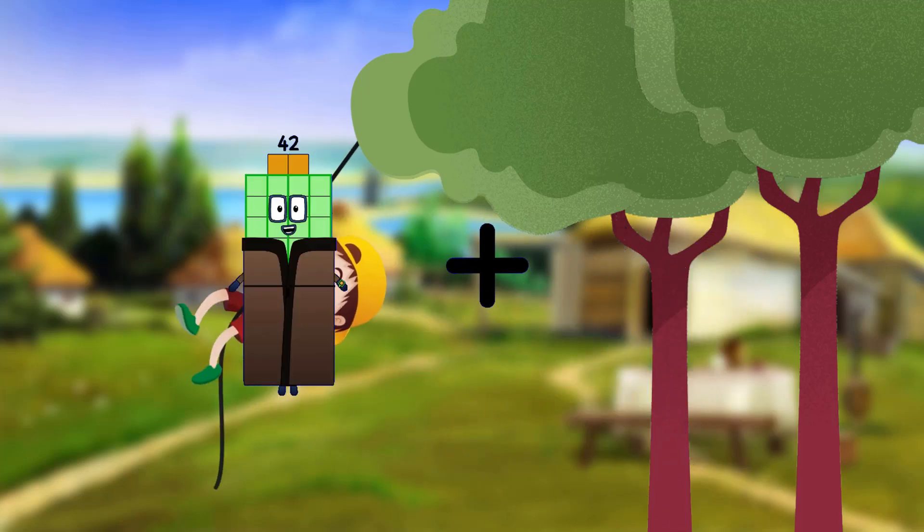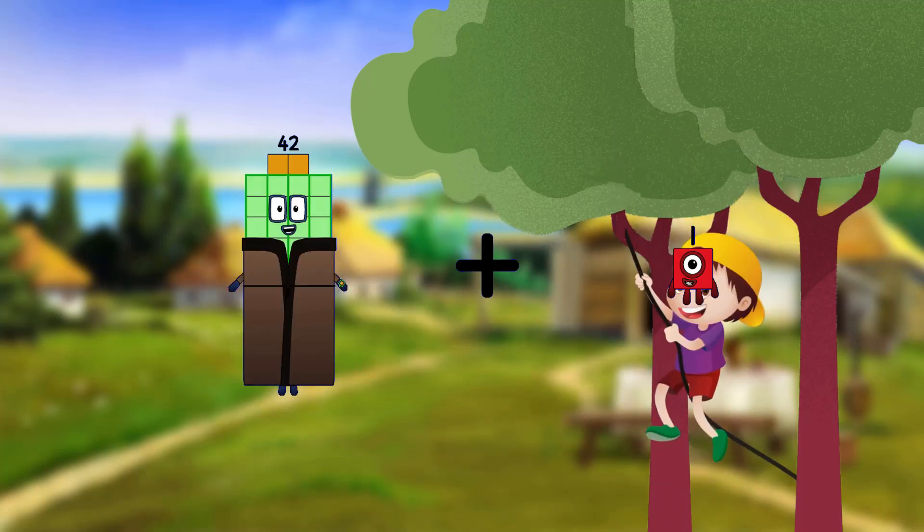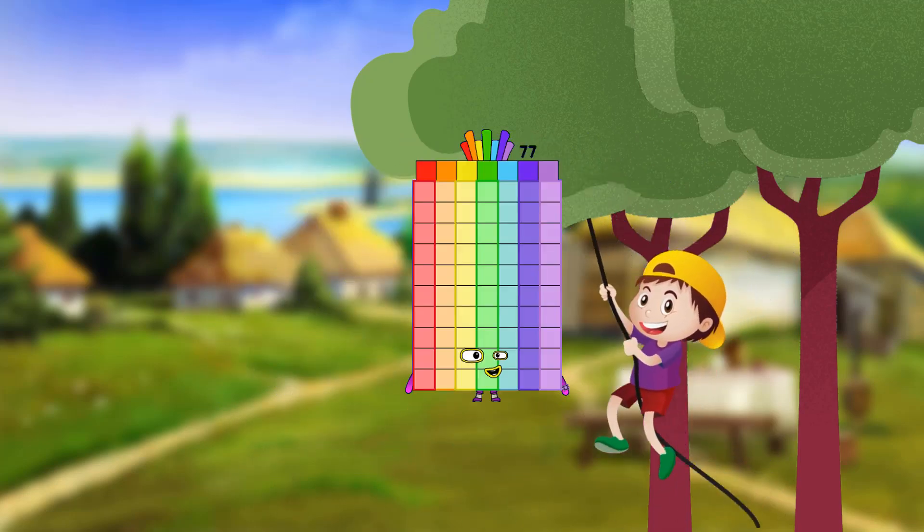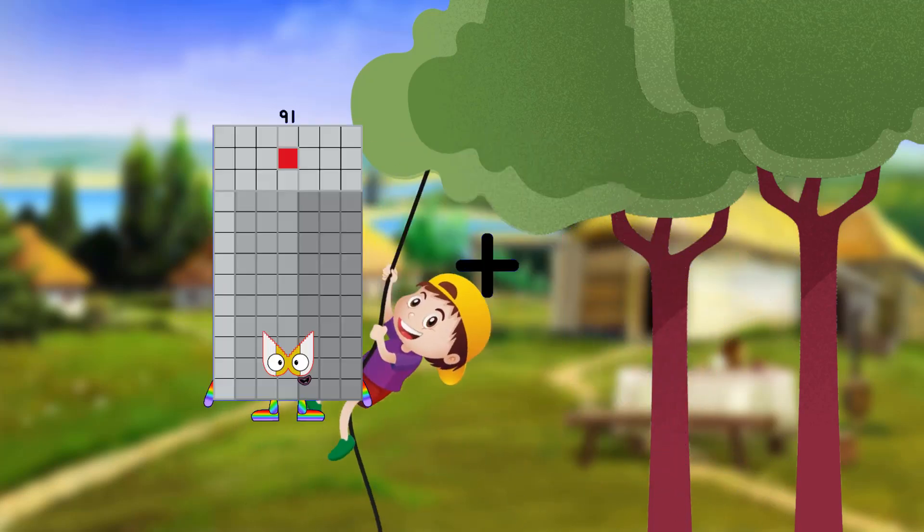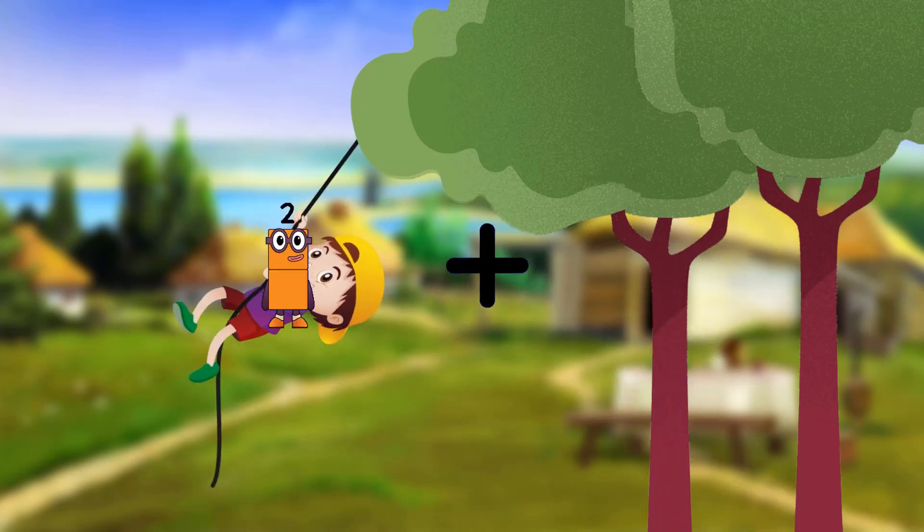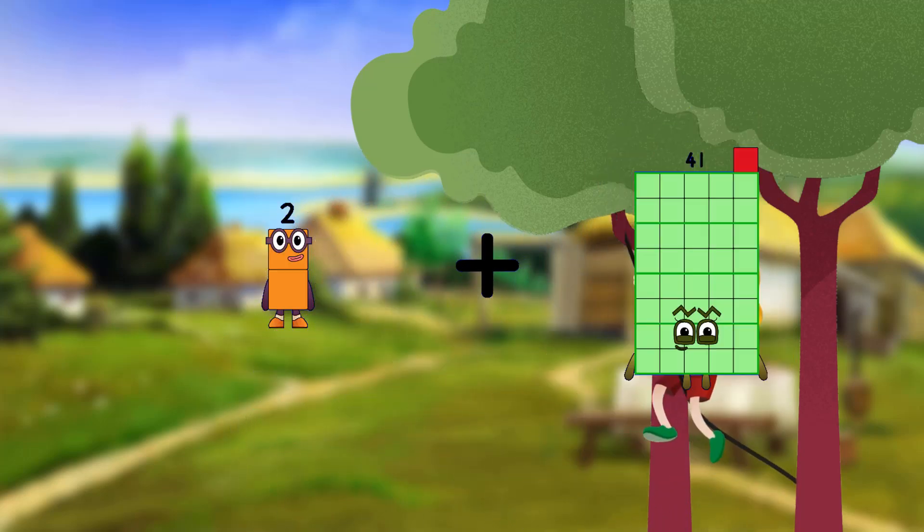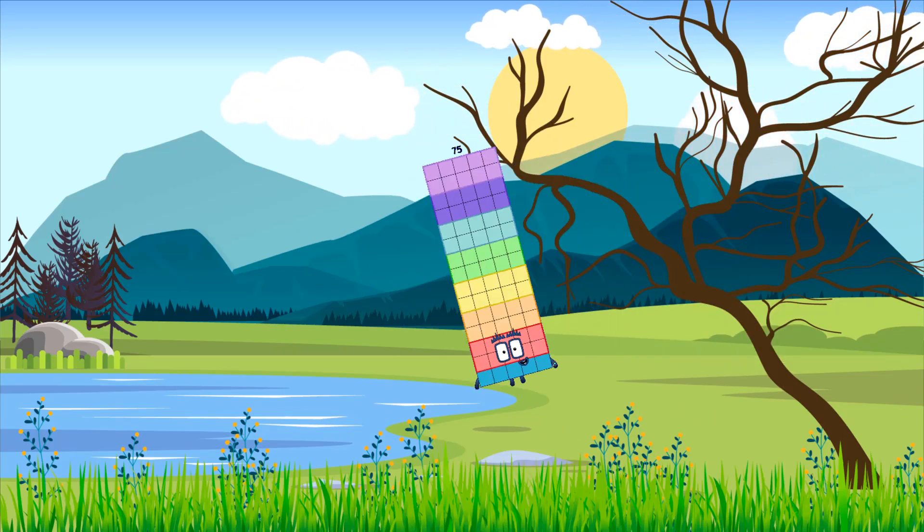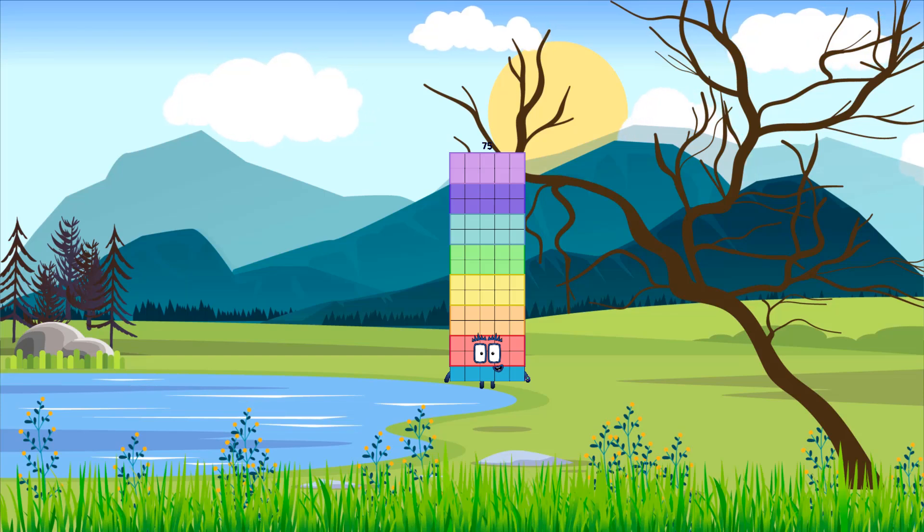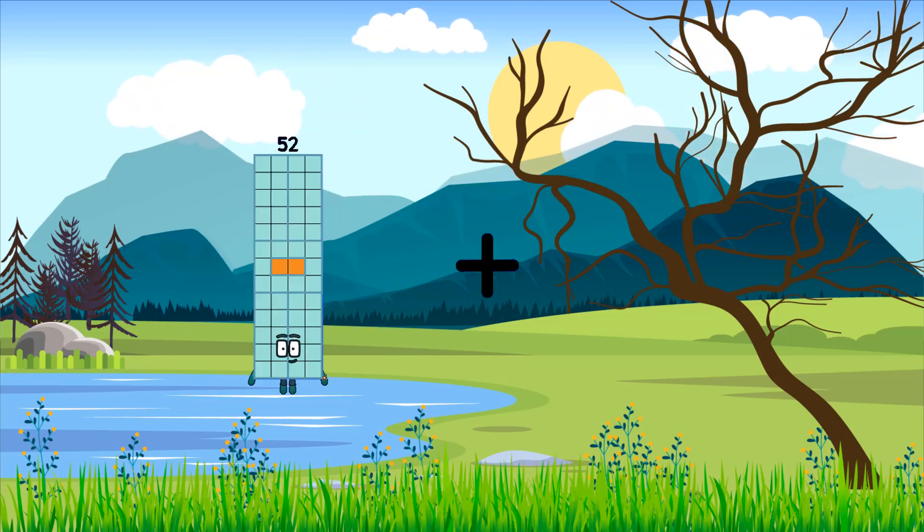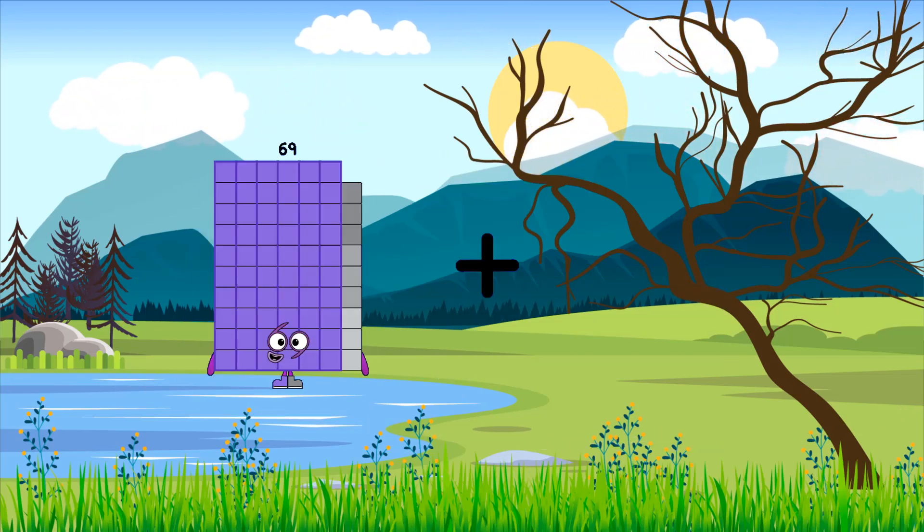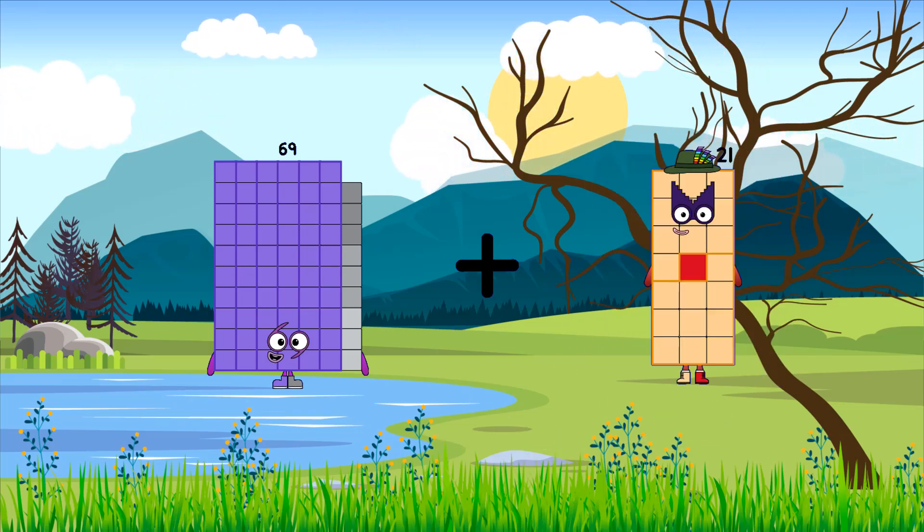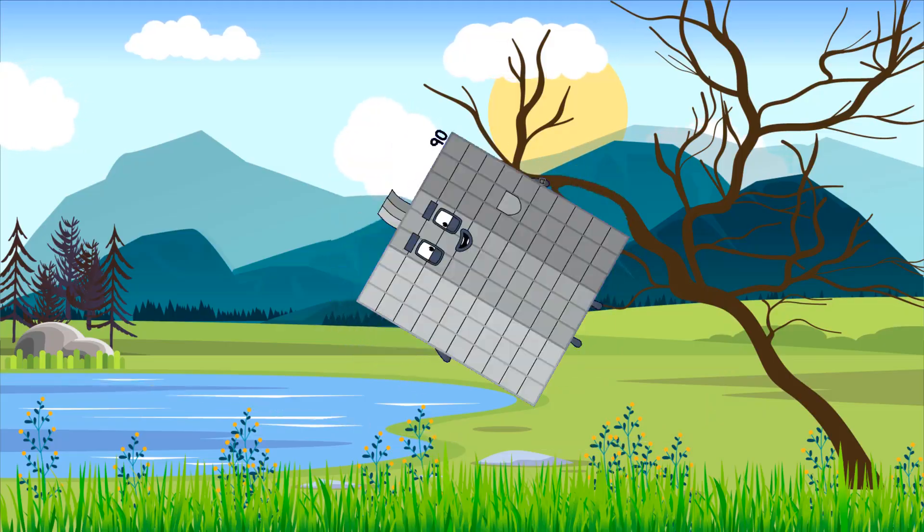42 plus 35 equals 77. 2 plus 73 equals 75. 69 plus 21 equals 90.